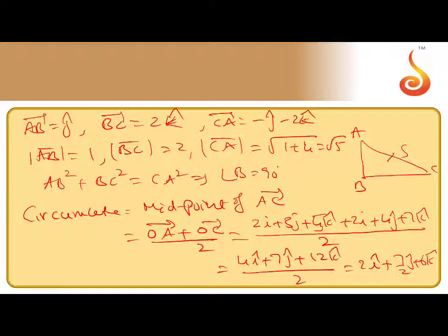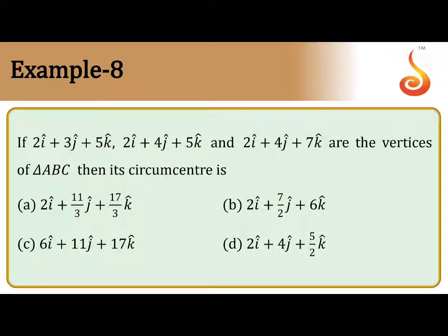Please check, the final circumcenter is 2i plus 7 by 2 j plus 6k is the answer for the circumcenter. Let us check whether what is the matching option. So we can go back, 2i plus 7 by 2 j plus 6k. Option B is the right answer.